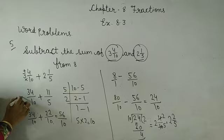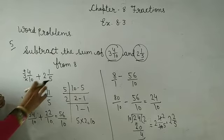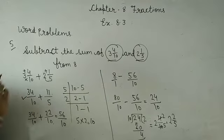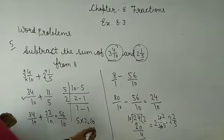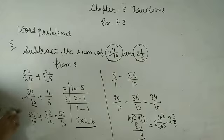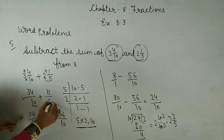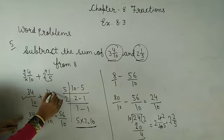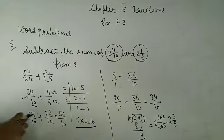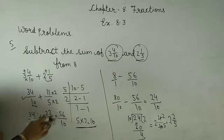First of all, what do we need to do? Add the two fractions. Convert 2 and 1 upon 5 to improper fraction: 11 upon 5. Then convert 5 to 10 by multiplying by 2. 11 becomes 22, 5 becomes 10. Adding gives 56 upon 10.